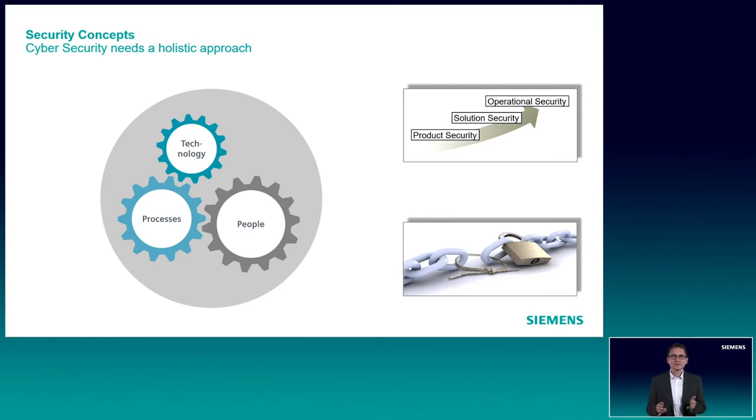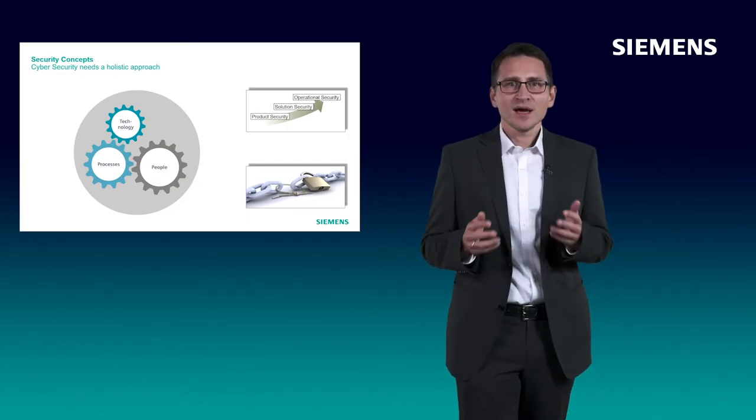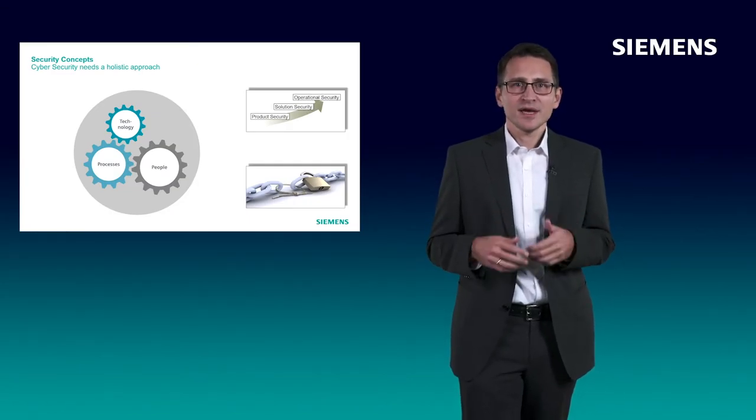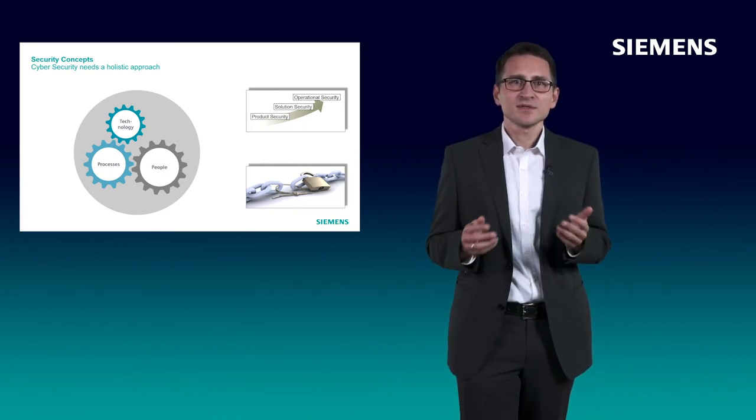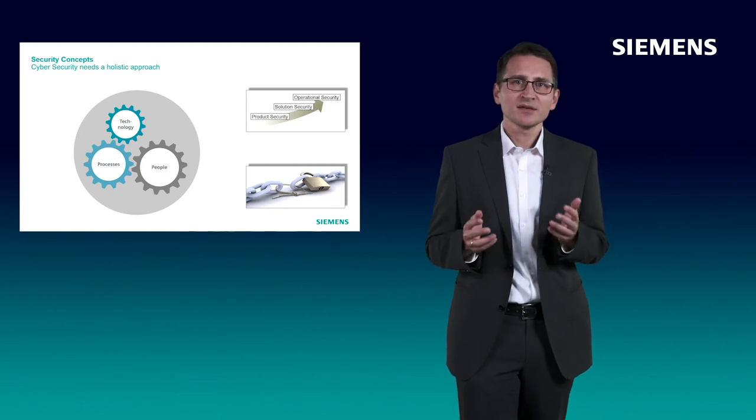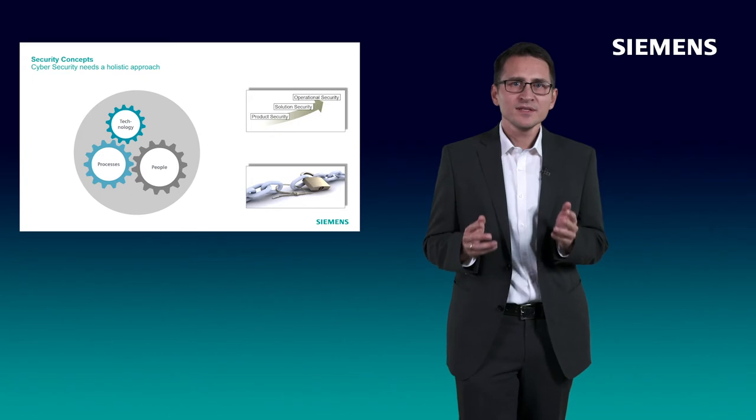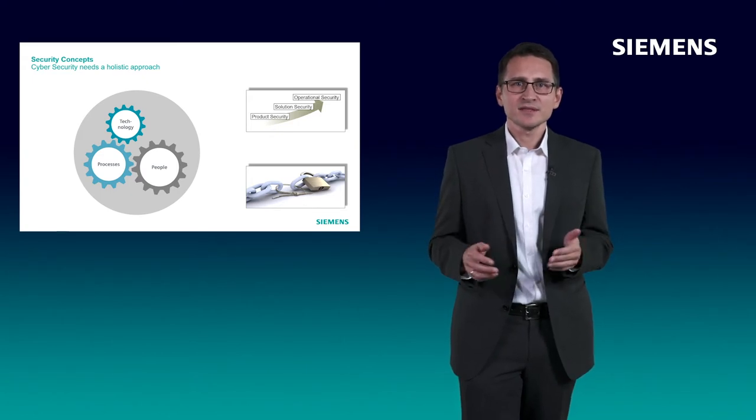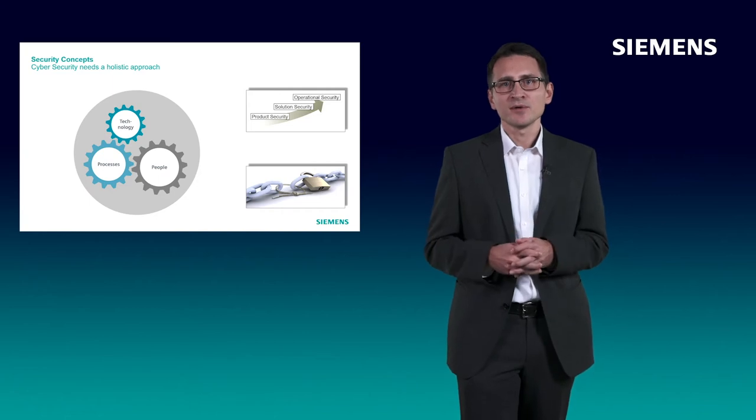Employees of involved parties must have security awareness and an understanding of cybersecurity. Security processes must cover the whole life cycle and implement solution and operational requirements. The technology must support the cybersecurity protection goals and comply with industry standards. These three categories must be addressed in the used products, during the solution implementation, and during operation.